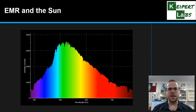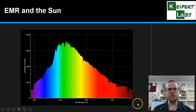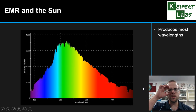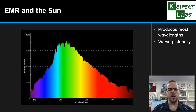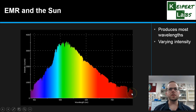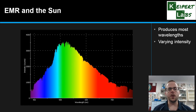Looking at our sun — the center of our solar system — and the electromagnetic radiation it produces. We're looking at our visible wavelengths from violet all the way through to red, and we can see that most wavelengths are produced. There is varying intensity: light in the middle portion of the spectrum around green, pale blue, and yellow is most intense. At the violet end and the red end, less light is produced. That helps explain why the sun appears fairly yellow to us — that's the region where we see the most light.